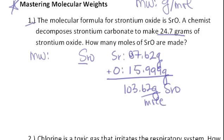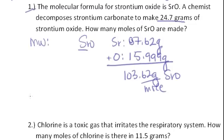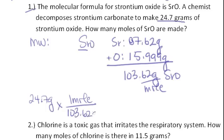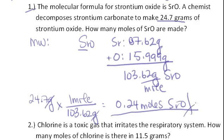Now that we know we started with 24.7 grams, we just need to convert this to moles. That's what the molecular weight is for—you just divide by the molecular weight. Grams cancel and the answer is 0.24 moles of strontium oxide. That's the answer.